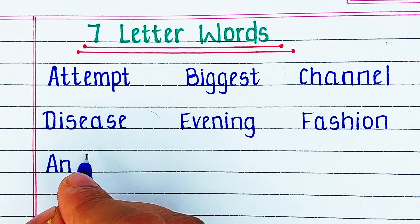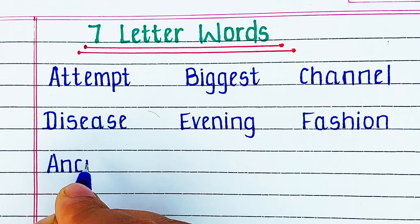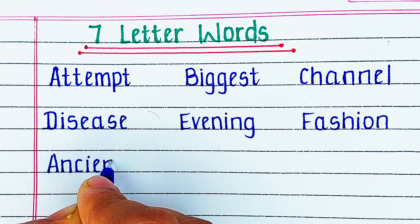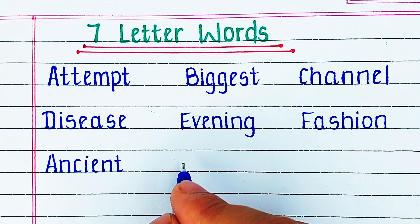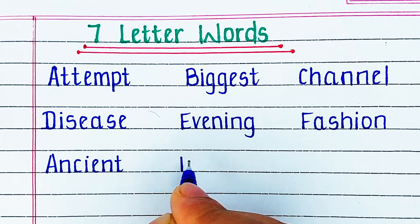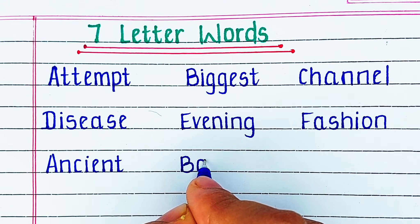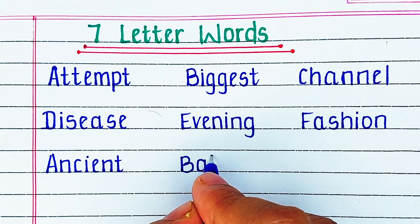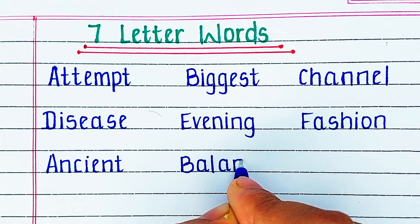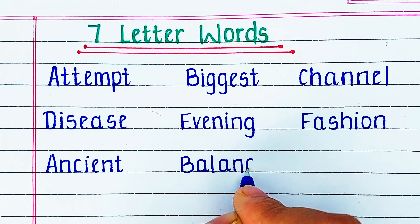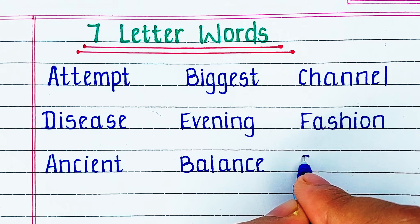Next we will come back to Alphabet A. The word is A N C I E N T, ancient. Next is Alphabet B. The word is B A L A N C E, balance.